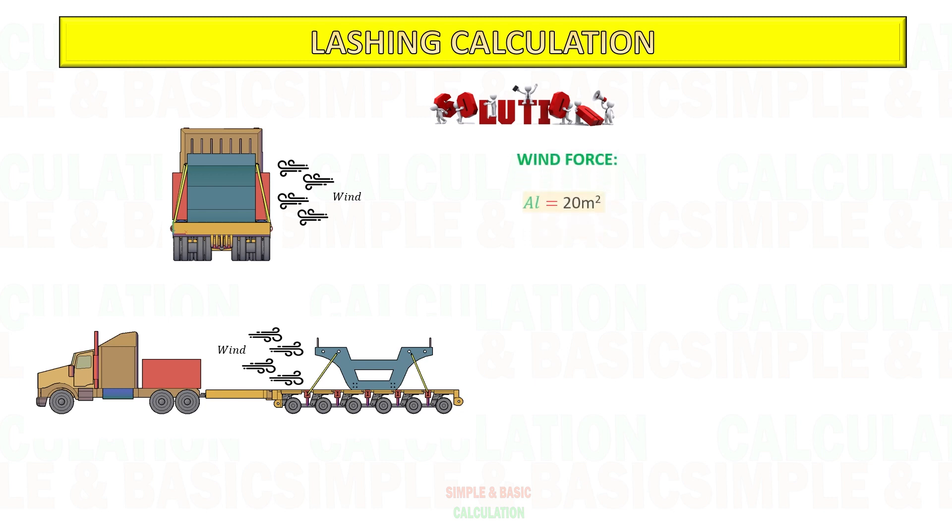After getting the surface area of the cargo that is exposed to the wind, start to calculate the wind force at longitudinal and transverse direction. Based on the table at Beaufort wind scale strong breeze, wind pressure value is 11.8 kilogram per meter square. Multiply it to shape coefficient and surface area.